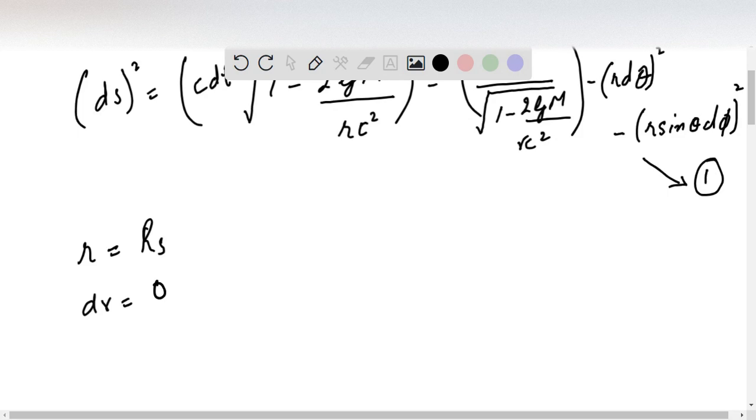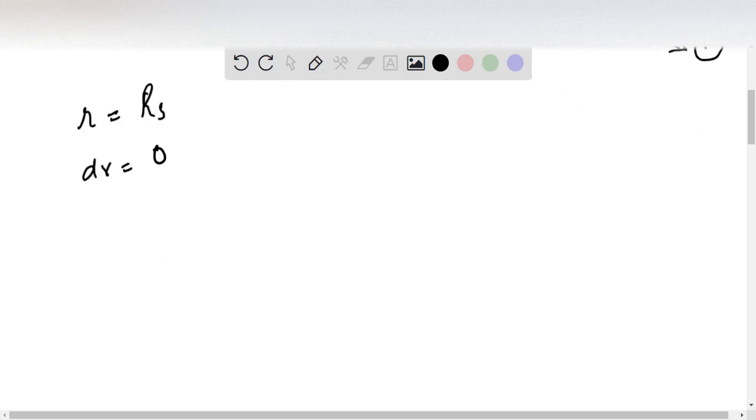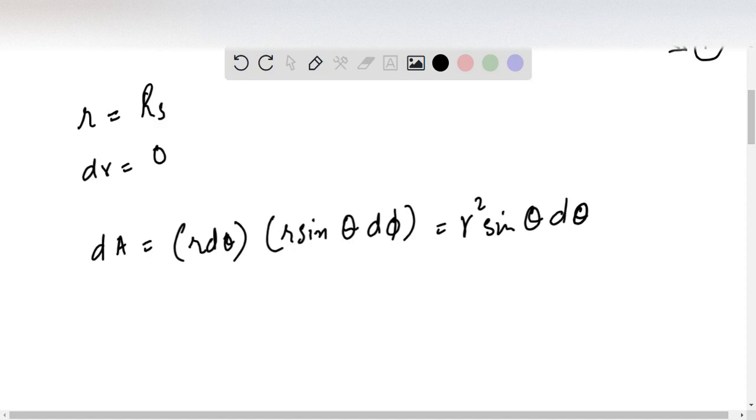Thus the differential element of the area of the spherical surface is equal to rd theta times r sin theta d phi, which is equal to r square sin theta d theta d phi. For the event horizon, r is equal to Rs.